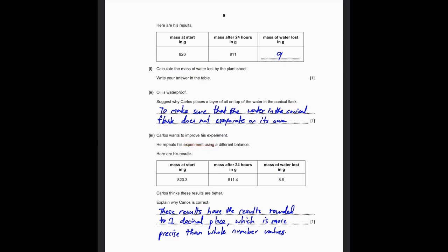Carlos repeats the experiment using a different balance. The new results are: mass at start 820.3 g, mass after 24 hours 811.4 g, mass of water lost 8.9 g. These results are better because they are rounded to one decimal place, which is more precise than whole number values. Precise is the key scientific vocabulary word here - without it, you don't get the marks, even if everything else is correct.